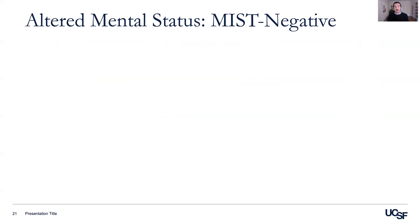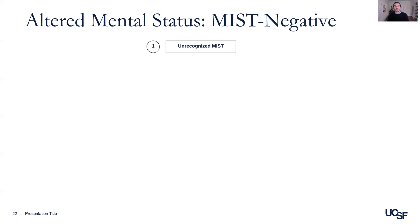Now, let's say you go through this entire list of the MIST mnemonic and you still can't find an underlying cause of a patient's encephalopathy. In this situation, I default to a MIST-negative approach. The first step is to go back and go through MIST again — I can't tell you how many times I've overlooked an elevated calcium on a patient's admission BMP, or not realized from their medication list that they were taking baclofen at home.